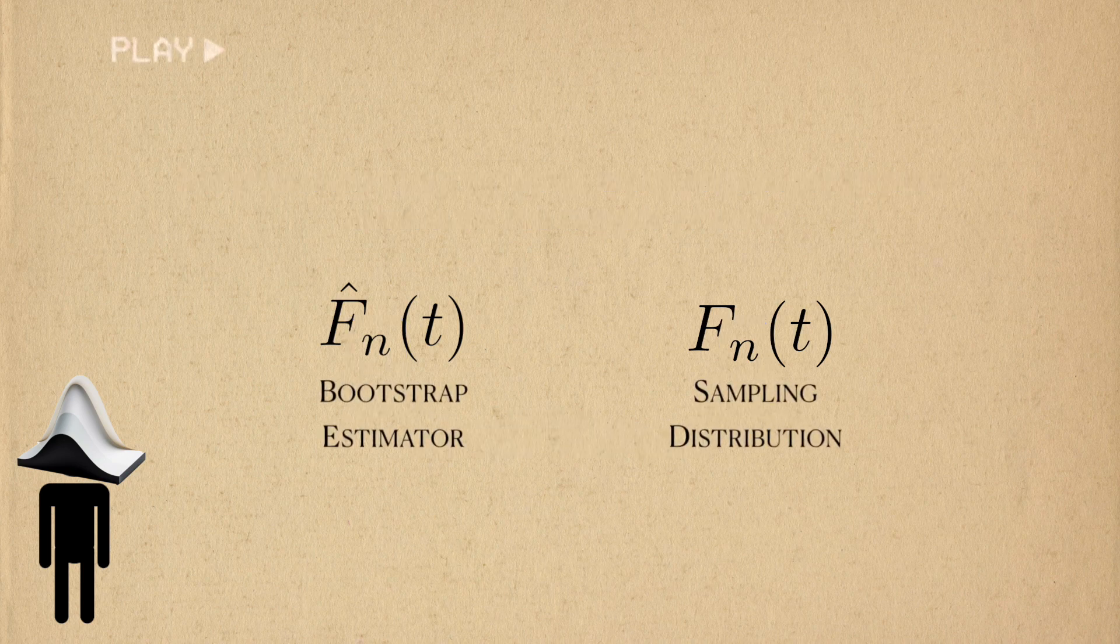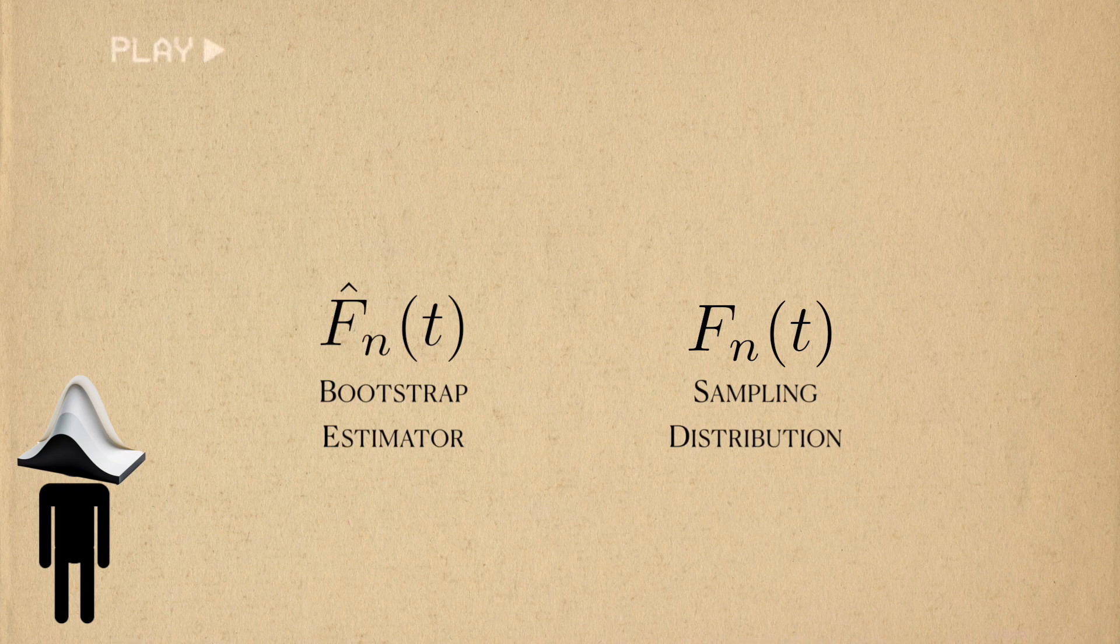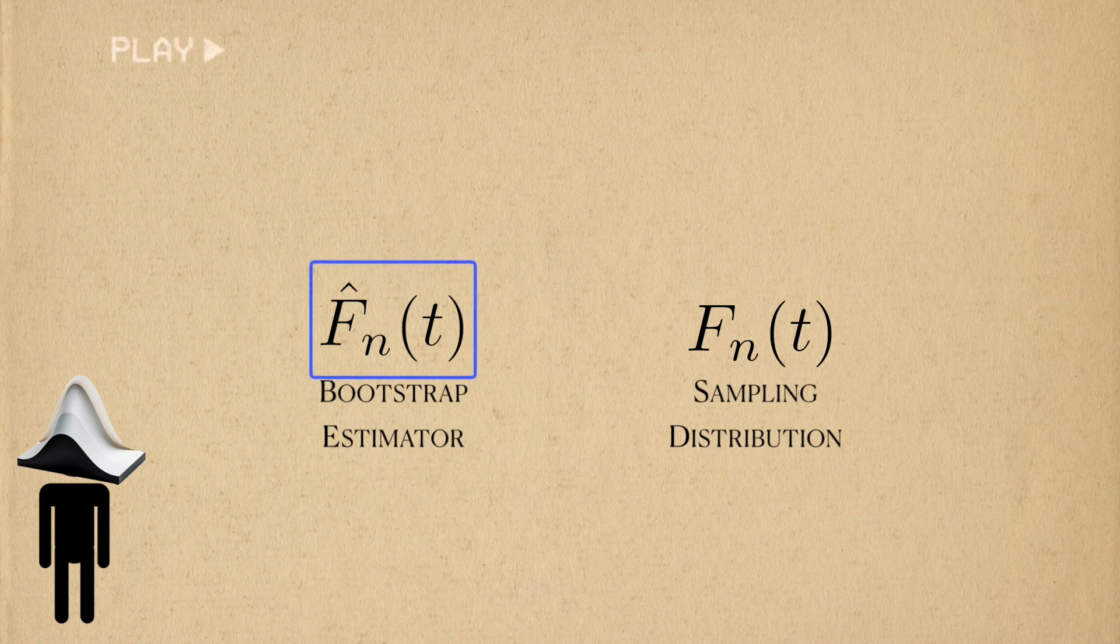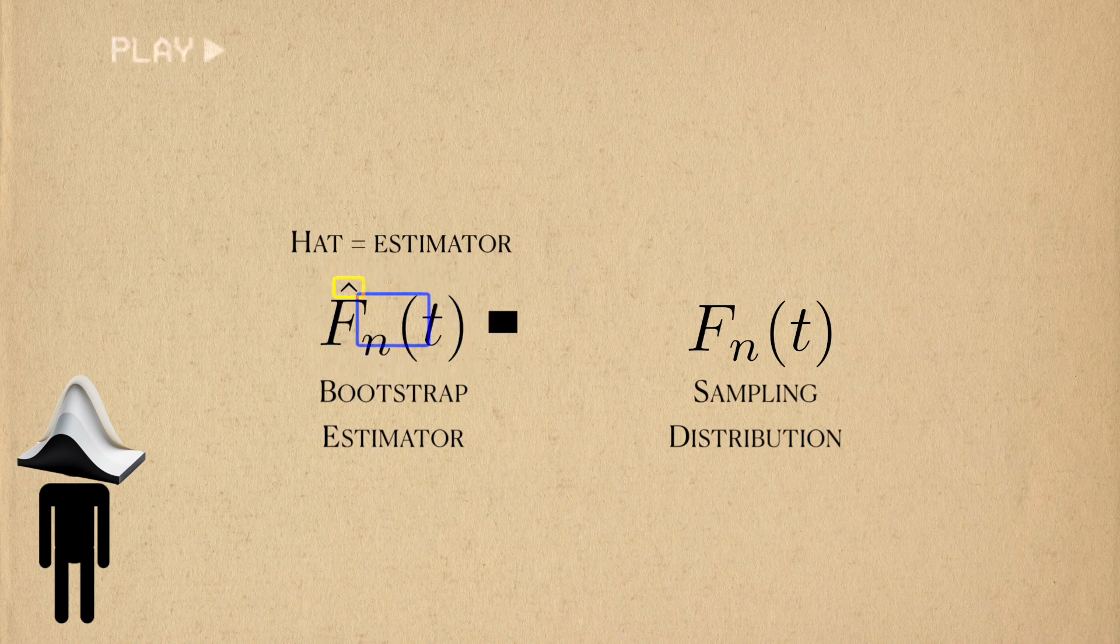Our candidate estimator to estimate this function is the bootstrap distribution. We denote the bootstrap distribution like this. In statistics, it's common to denote an estimator with this little hat. In general, for an estimator to be good, it must be close to the thing that it wants to estimate.